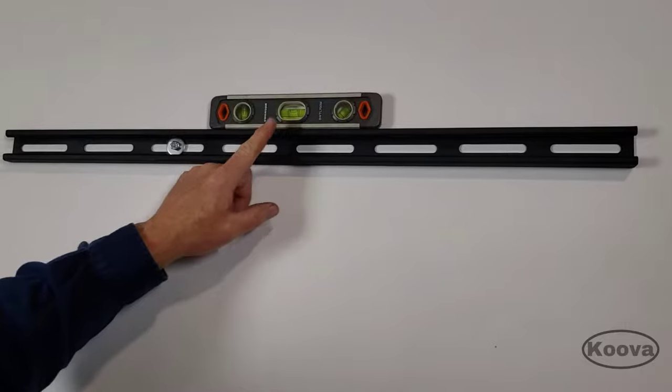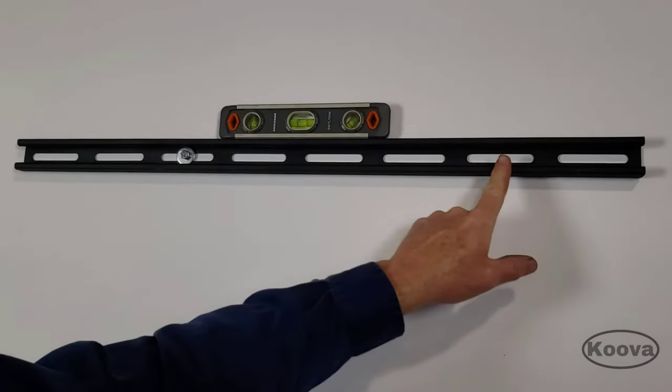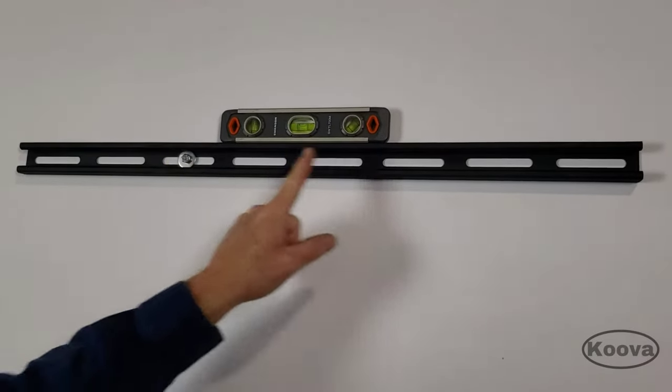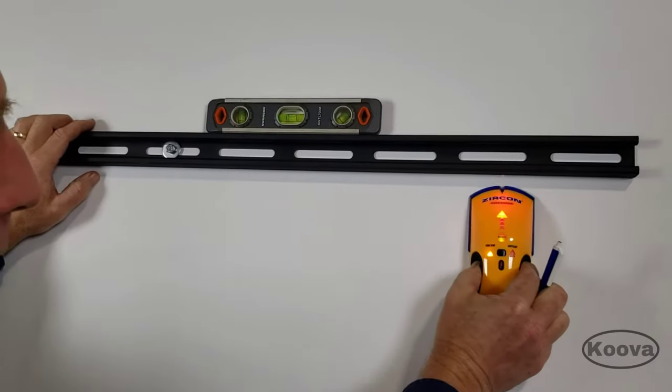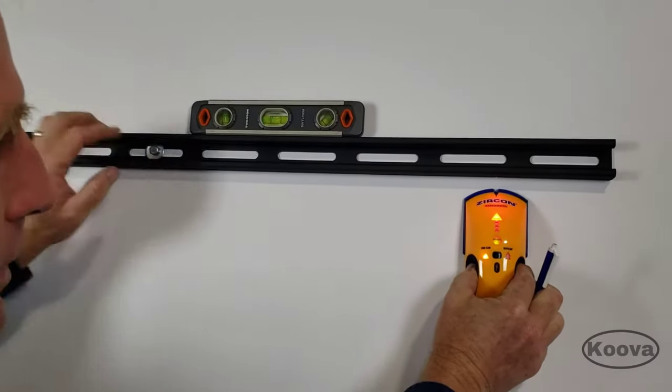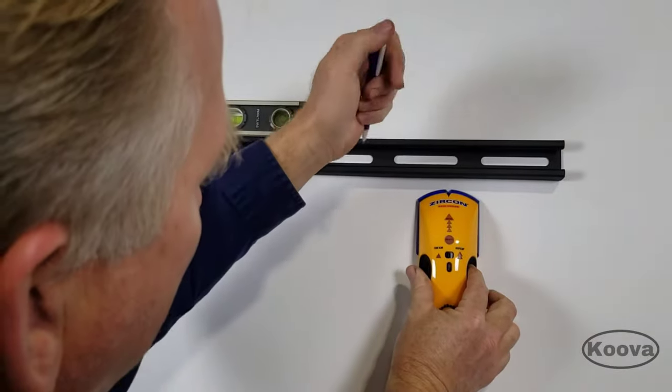Once you've leveled it, it's easy to find the second stud you need to go into. It's going to be about 16 inches from this one. Just use your stud finder and make a mark.